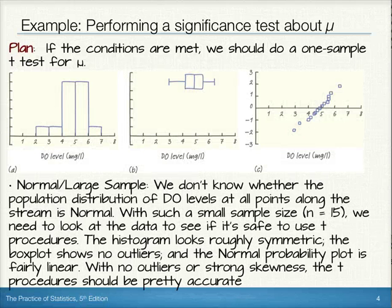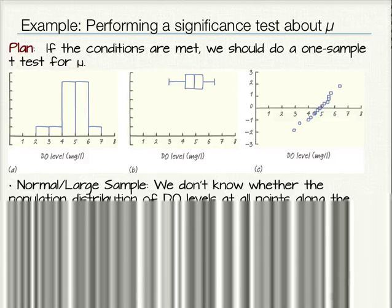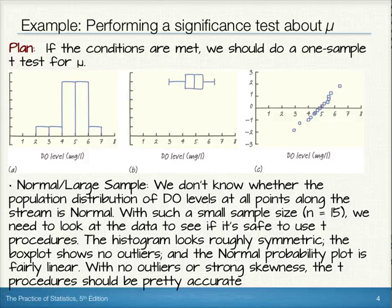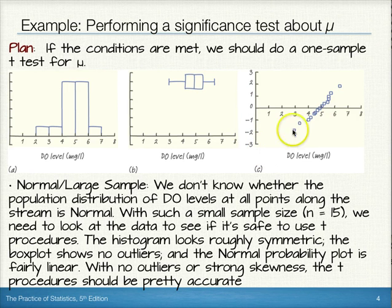Finally, for normal and large sample, we don't know whether the population distribution of DO levels at all points along the stream is normal. With such a small sample size of only 15, we need to look at the data to see if it's safe to use t-procedures. We note that the histogram looks roughly symmetric, the box plot doesn't show any outliers, and the normal probability plot is fairly linear, so with no outliers or strong skewness, the t-procedures should be pretty accurate.